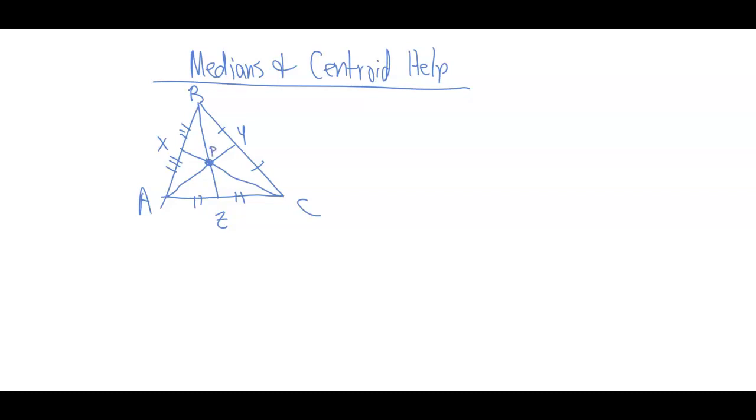If you're looking at this, we came up with some formulas in our notes, and it was BP is two-thirds of BZ, and we also had that PZ is one-third of BZ, and we also had one other one where BP was also equal to two times PZ.